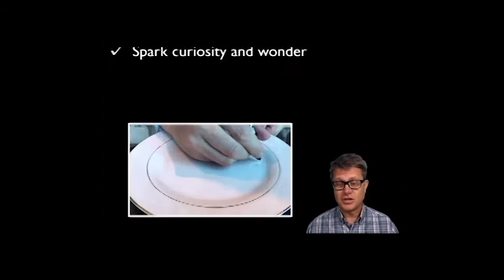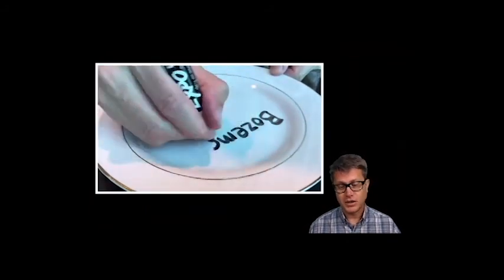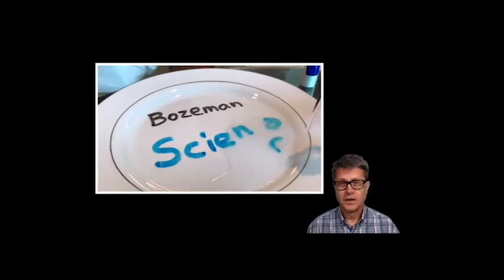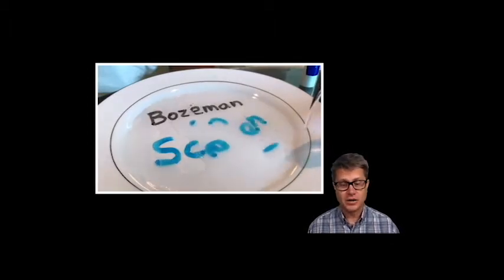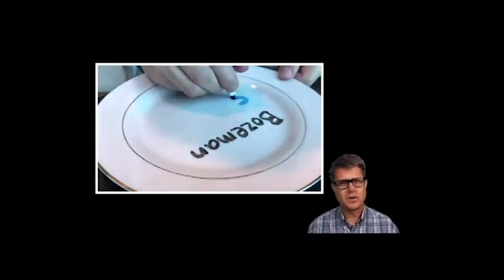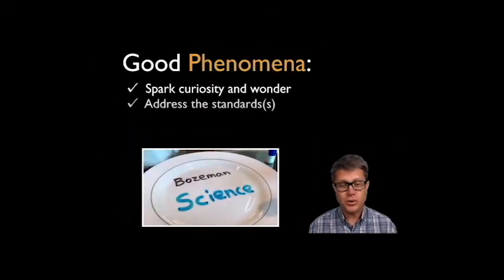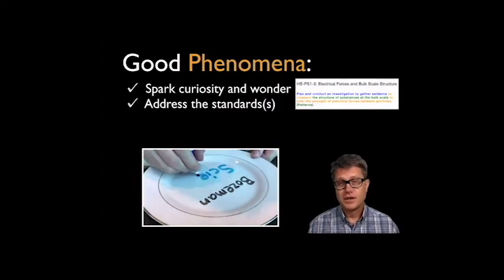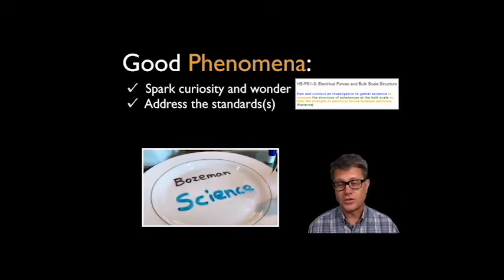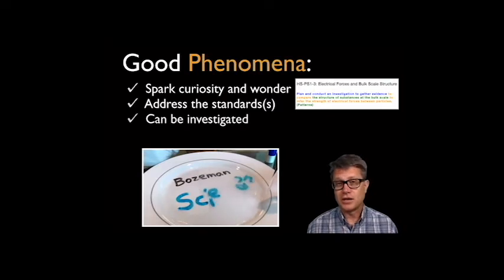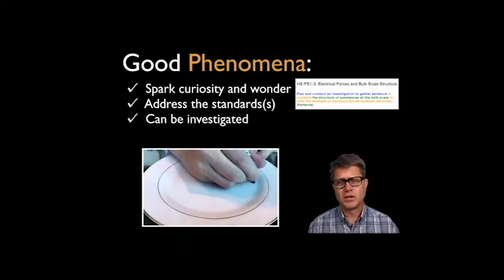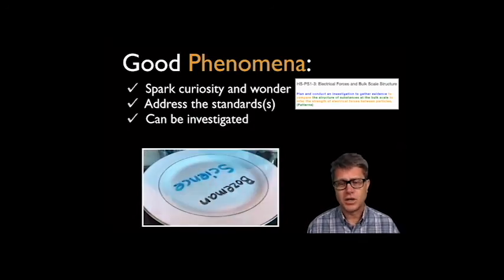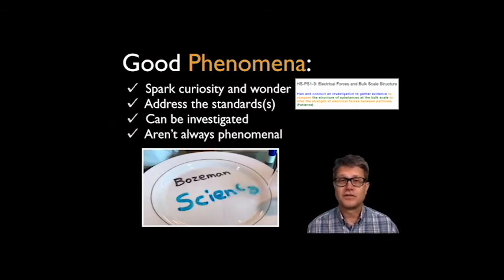What makes a good phenomenon? First, it should spark curiosity and wonder. Here's an example: if you write on a glazed plate with a regular dry-erase marker, let it dry, and pour some water on it, the letters are going to start to float up. First time kids see this, they're like 'Wow, that's amazing — why is that occurring?' Once they start to say that, you have them. It's important, however, that your phenomena addresses a standard — in this case it's tied to the physical science standard on intermolecular forces and bulk structure. You also want to make sure it can be investigated, so kids can do their own experiments and test ideas about what is causing the behavior.